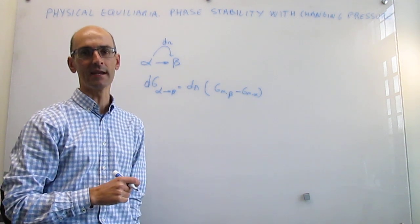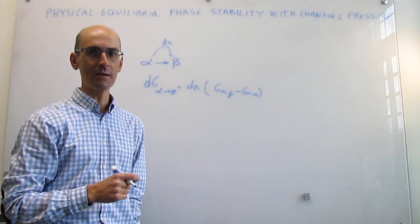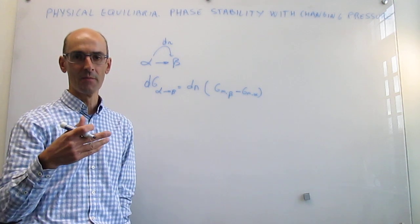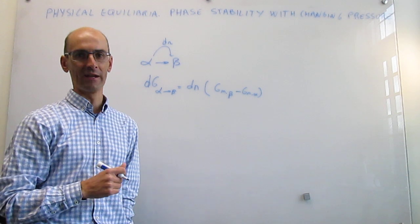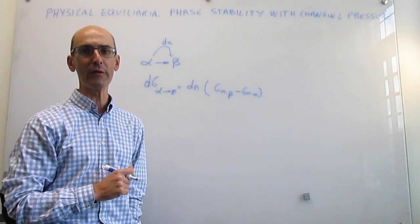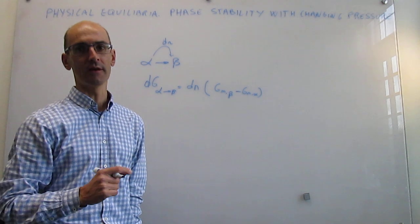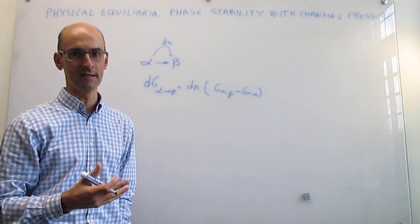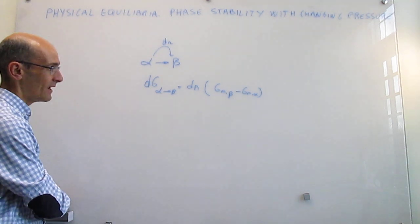For silicon at ambient conditions, the solid has the lowest molar Gibbs energy — lower than the liquid and gas phases. For water under ambient conditions, however, it is the liquid phase that has the lowest molar Gibbs energy, and that controls which phase is stable.